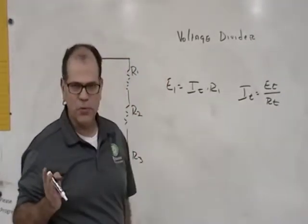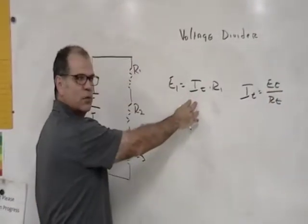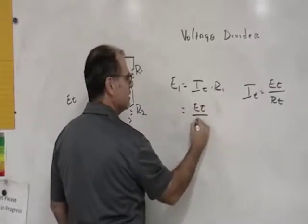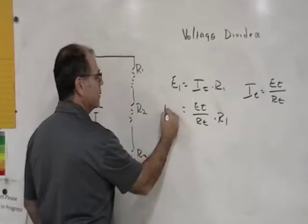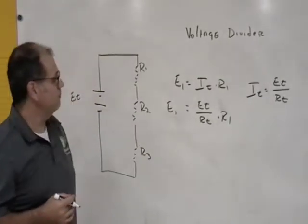All they do in the law of proportionality is just substitute this value in over here with this equation. So they'll do something like this: ET divided by RT times R1 gives you the voltage drop at E1.